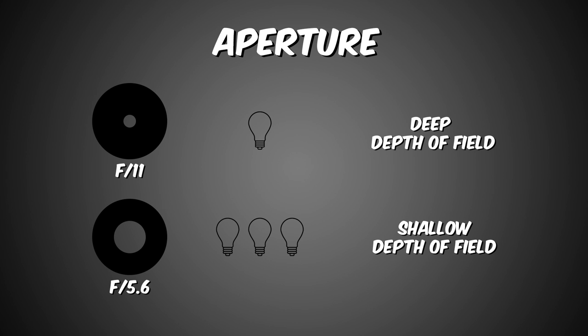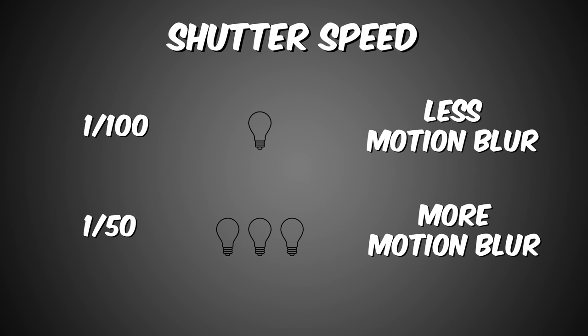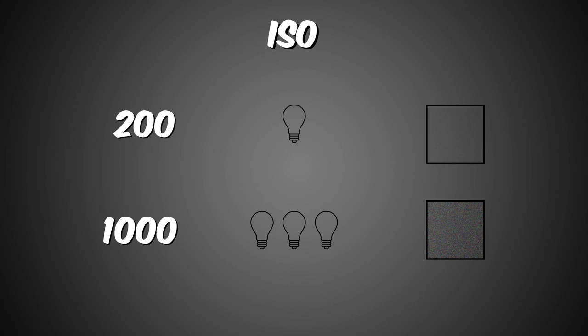Let's quickly review. Aperture: small hole means less light and deep depth of field; large hole means more light and shallow depth of field. Shutter speed: smaller value means less motion blur and less light; higher value means more motion blur and more light. ISO: higher value means more light and more grain; lower value means less light and less grain.